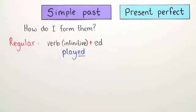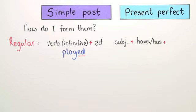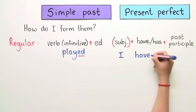In the present perfect, you have the subject, which decides whether you then add have or has, plus the past participle, for example, I have played.